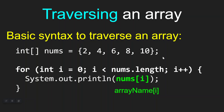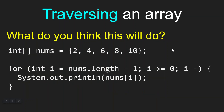Hopefully you see the connection between traversing a string versus traversing an array. In my opinion, it's easier to traverse an array — the syntax is a little more simplified since you don't have to call the substring method. Now let's look at some other ways to traverse an array. Here's the same array called nums, but this time the for loop is different. Read through the for loop, make a prediction about what you think is going to print, and then move forward in the video when you're ready.